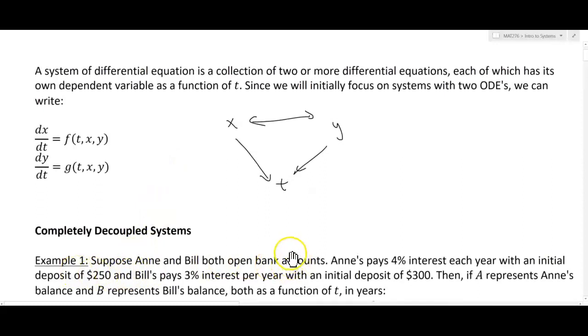So suppose Ann and Bill both open bank accounts. Ann's pays 4% interest each year with an initial deposit of $250, and Bill pays 3% interest per year with an initial deposit of $300. Then if A represents Ann's balance and B represents Bill's balance, both as a function of t in years.